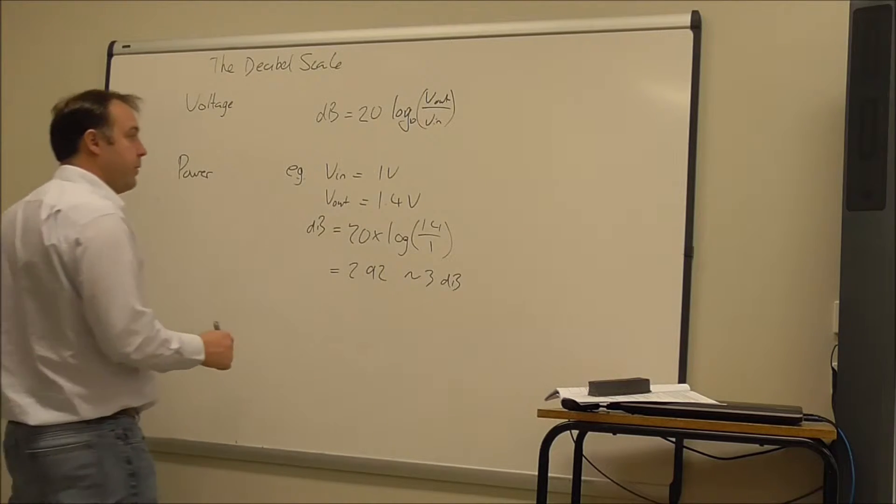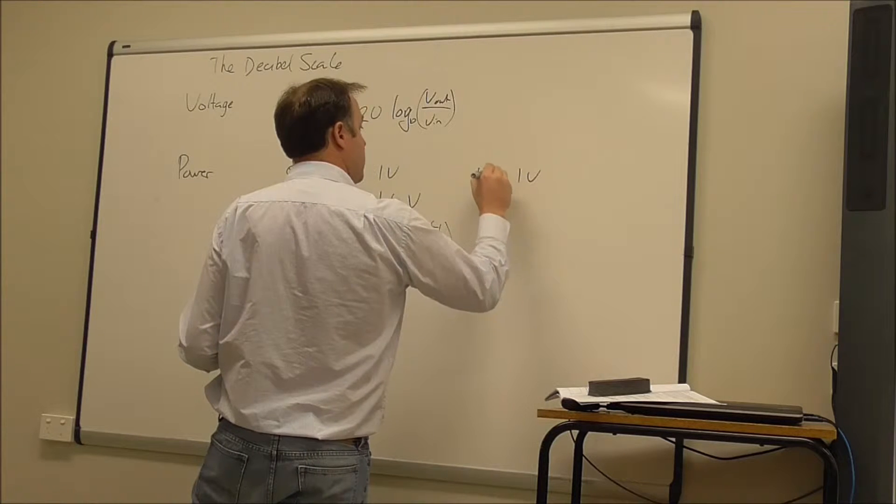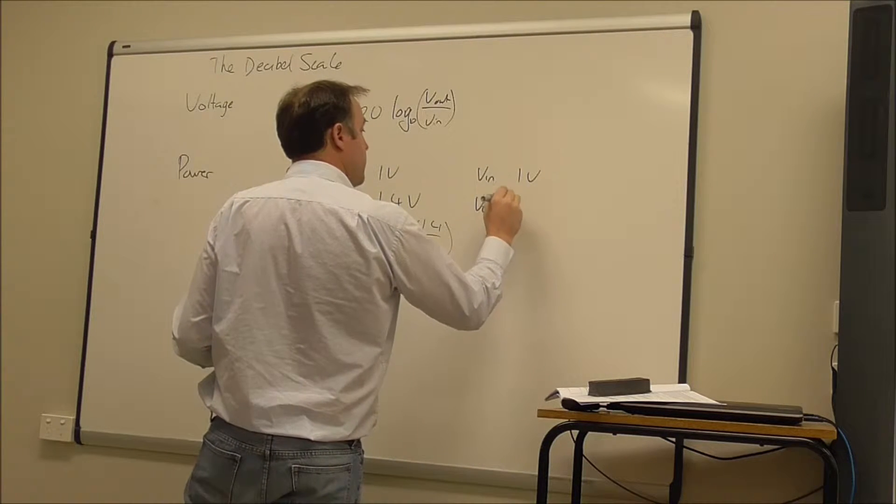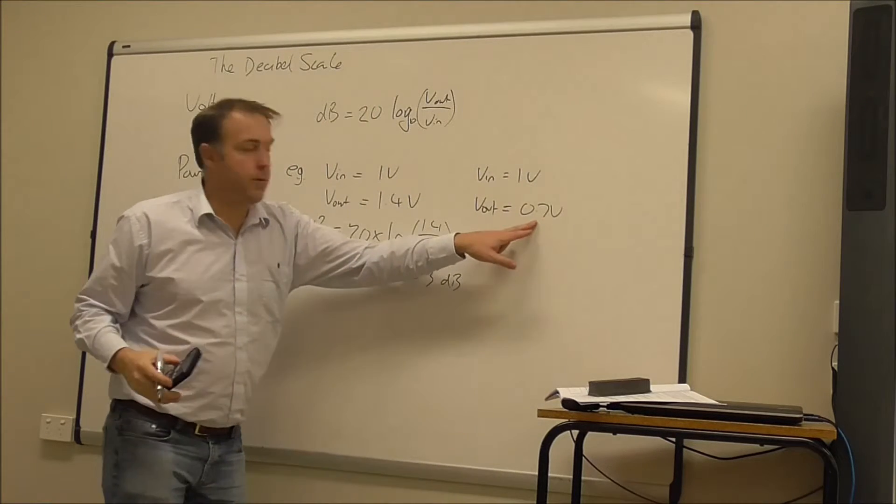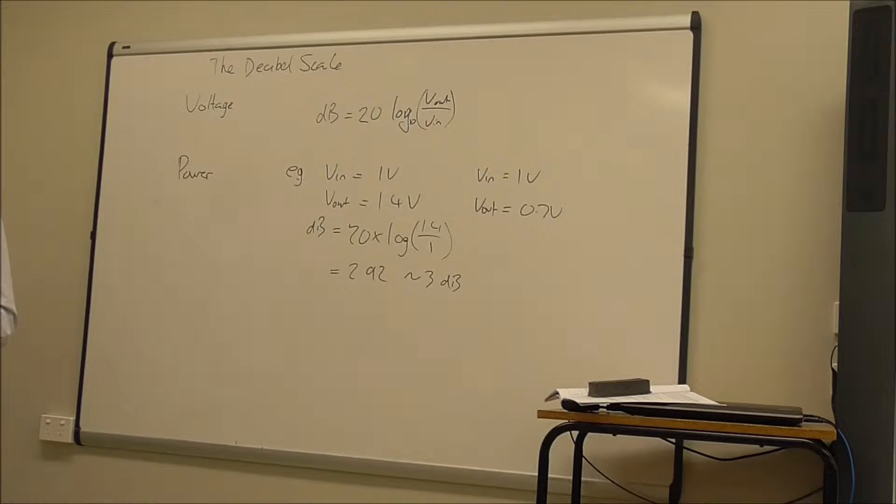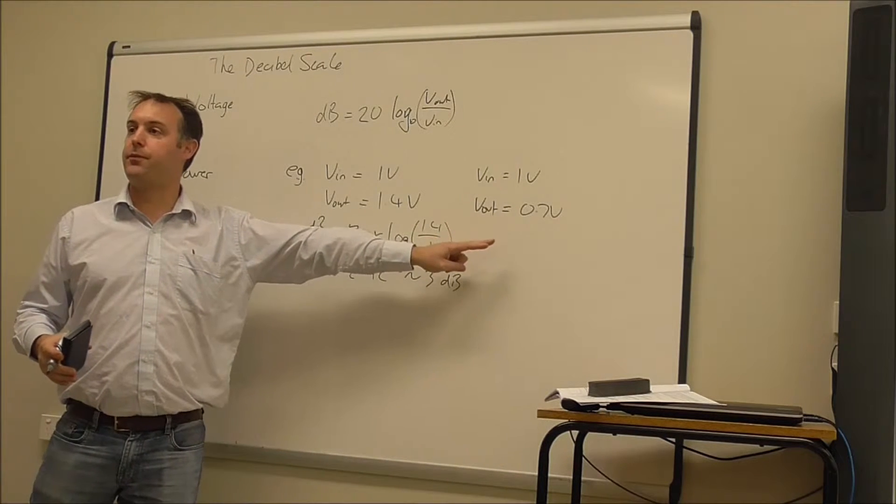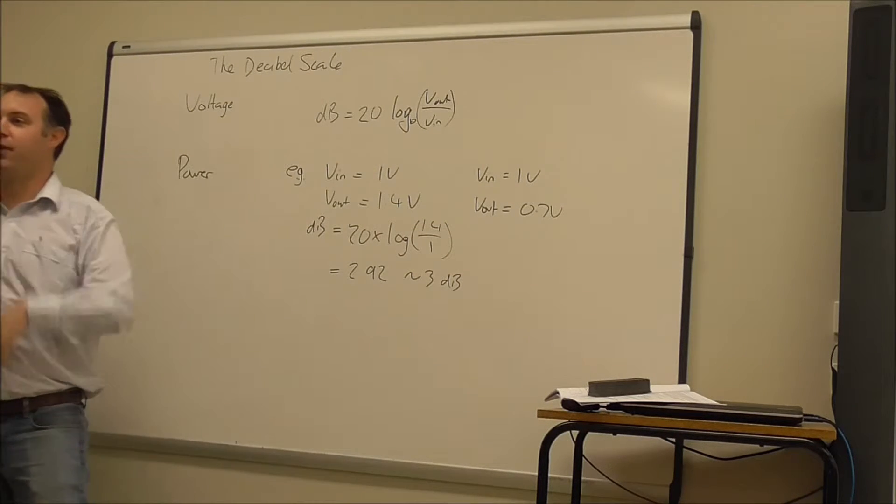If I look at another one where the input is now 1 volt, and the output is 0.7 volts, why might I pick on this one? What's 0.7 or 0.707? What's significant about that? That would be, for a filter, this would be what frequency? What do we call it? The cutoff frequency, isn't it?